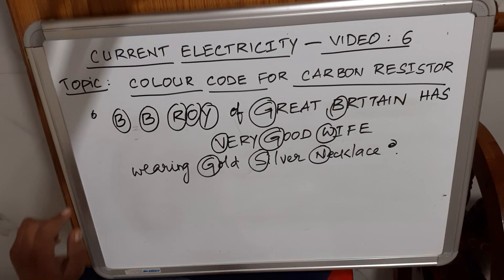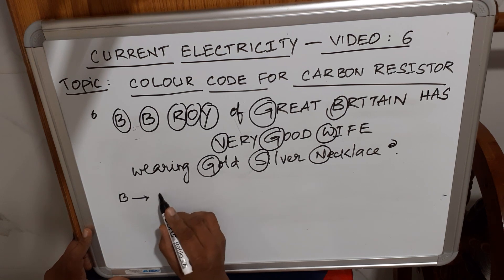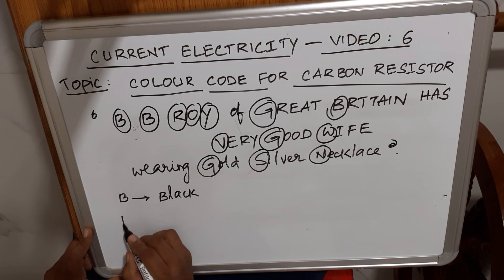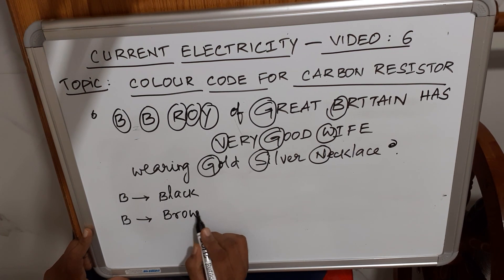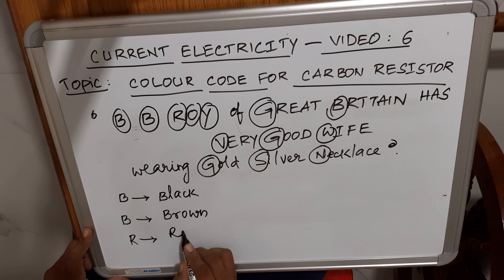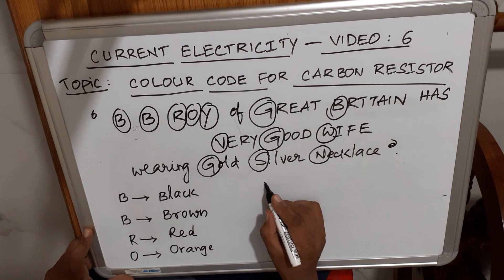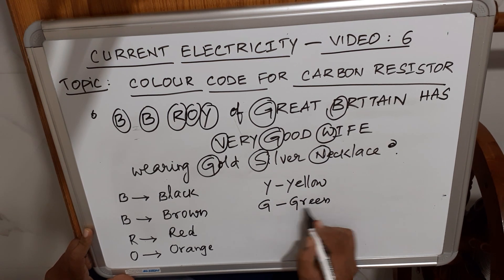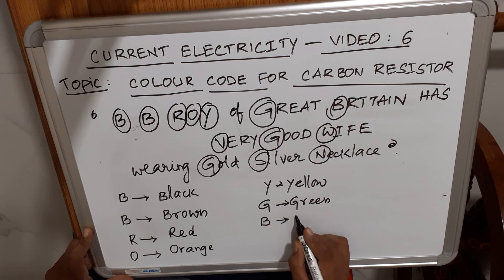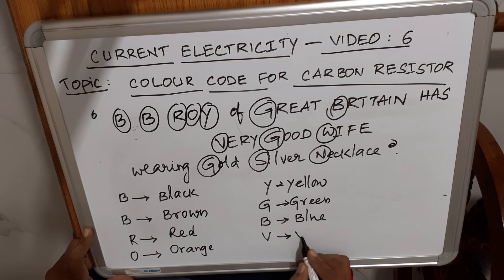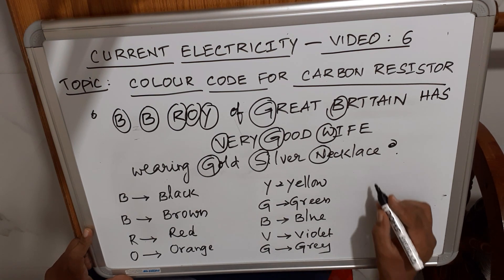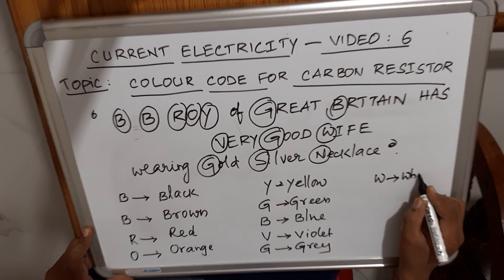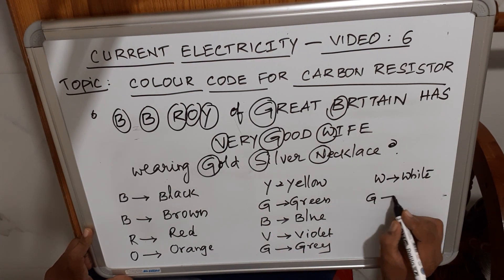The colors in sequence are: first B — Black, second B — Brown, R — Red, O — Orange, Y — Yellow, G — Green, B — Blue, V — Violet, G — Gray, W — White.